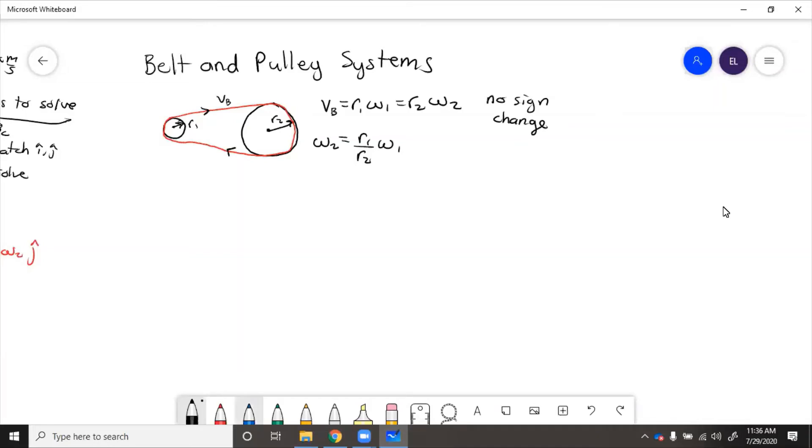So if we, for example, put some numbers into this, we'll say R1 equals 2 centimeters, R2 equals 5 centimeters, and omega 1 equals 1 radian per second. Then omega 2 equals 2 over 5, and we don't have to convert these to meters because the units are canceling. They're both in centimeters times 1 equals 0.4 radians per second equals omega 2.